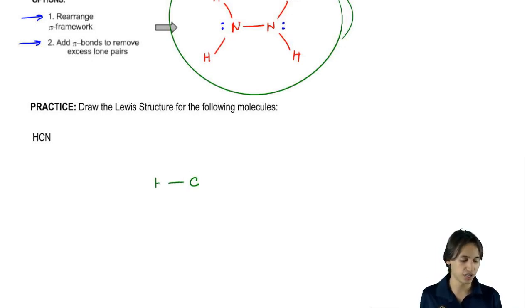And now I'm going to go to my next rule, which is to fill every octet with electrons. So carbon needs four electrons, nitrogen needs six. Hydrogen is fine.